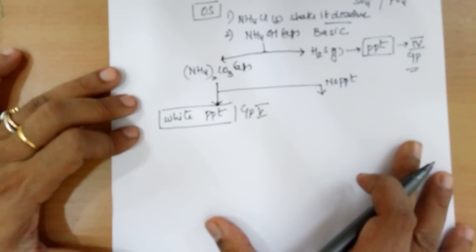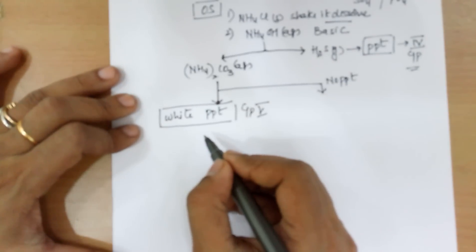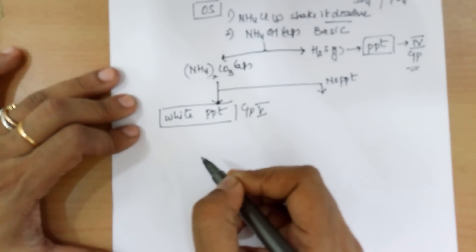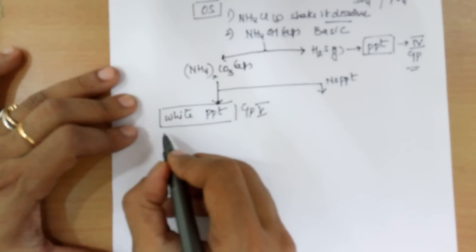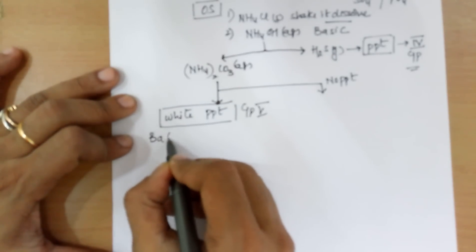Once you get a group 5 white PPT, by the color of the PPT, you cannot identify barium, strontium and calcium, since all the three will give you a white PPT.